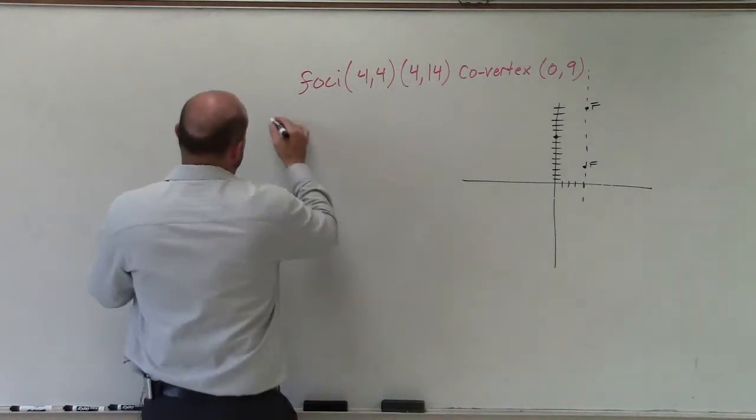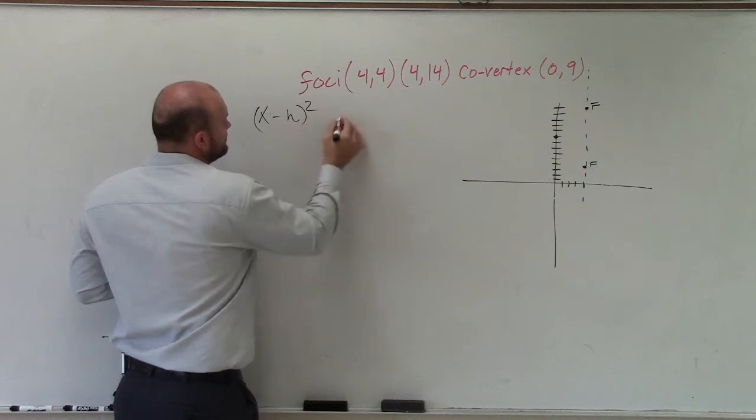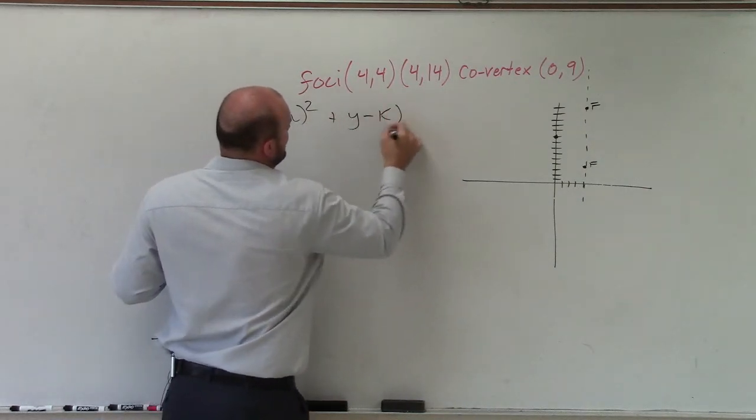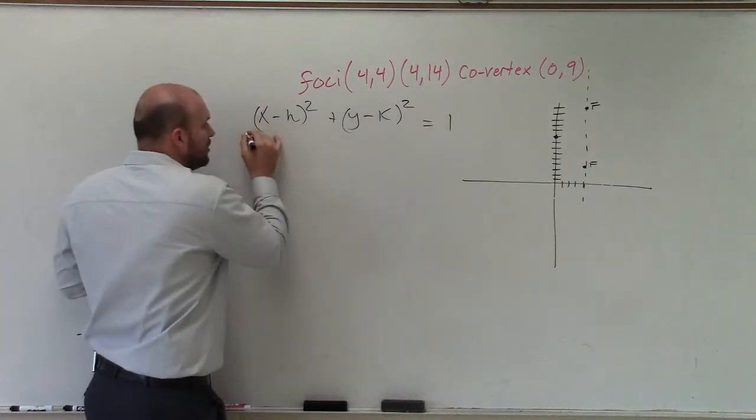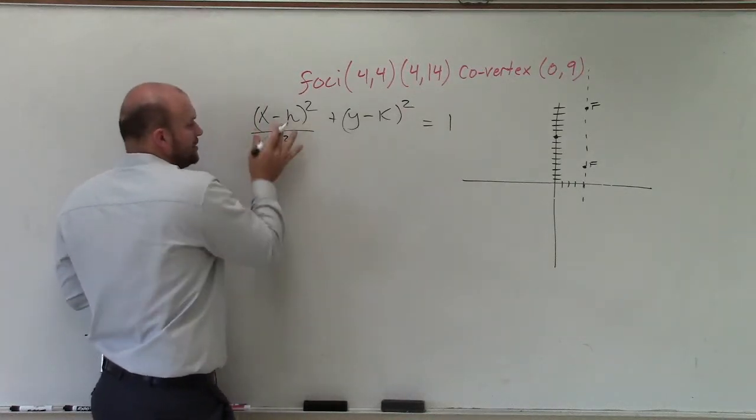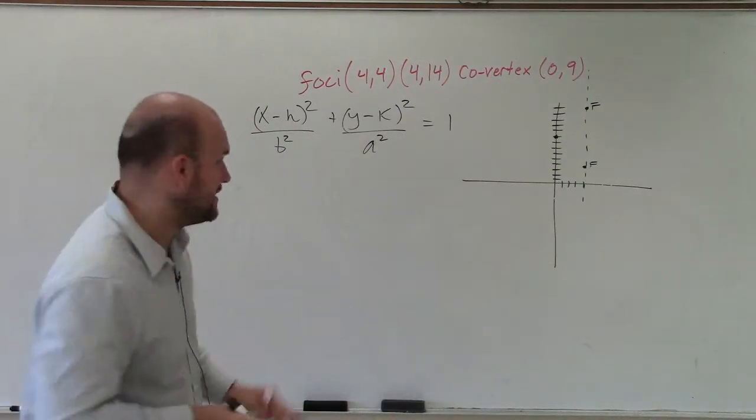Since I know my major axis is vertical, I'm going to write the equation (x minus h) squared plus (y minus k) squared equals 1. Since it's vertical, I'm going to have b squared under the x and a squared under the y. I'll get to the a and the b in just a second.